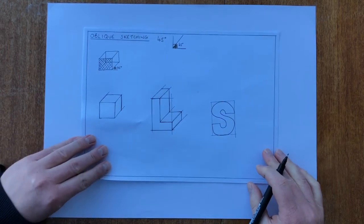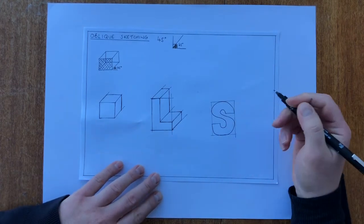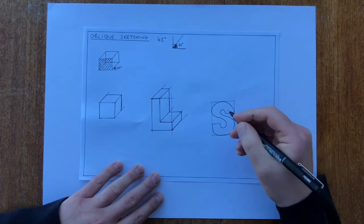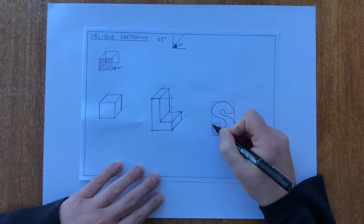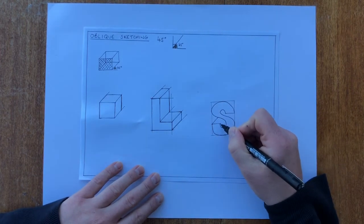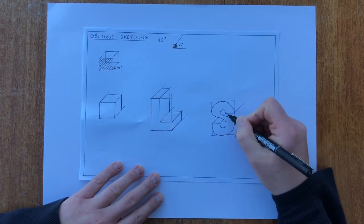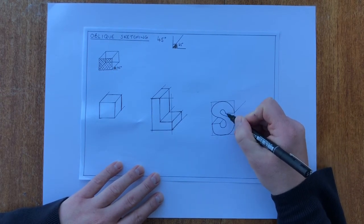To turn the S into a 3D shape, what we're looking to do is take lines from any corner points at 45 degrees, like we did on the L shape here. So I'll take a line from this point here at 45 degrees. Same with this point just here, this point just here. Won't take up this point because you won't see it.